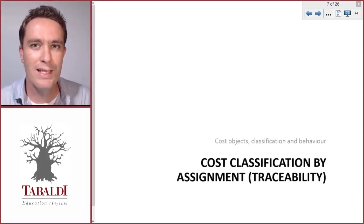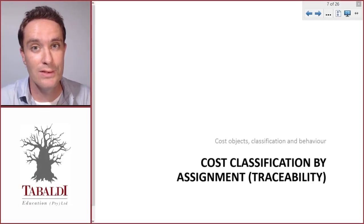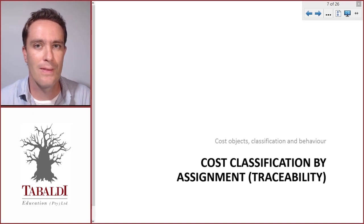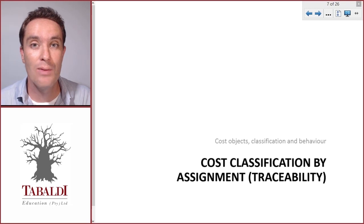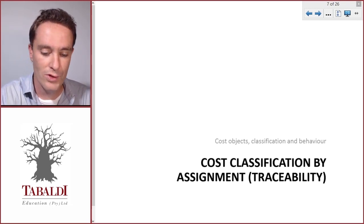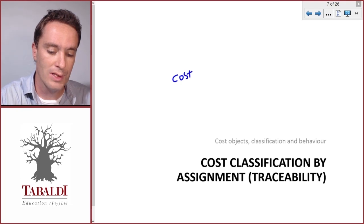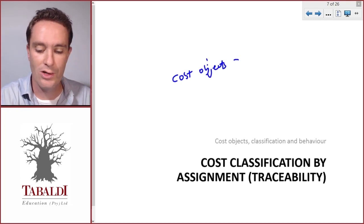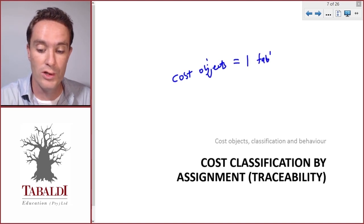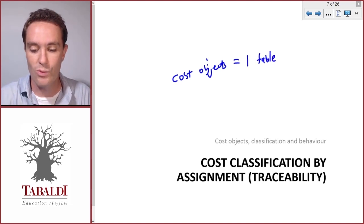We have a company that makes tables and we spent a lot of costs in our first month. We made a few tables and we now want to know how much did it cost us to make one of those tables. First we define our cost object — our cost object is one table, or one unit of production.